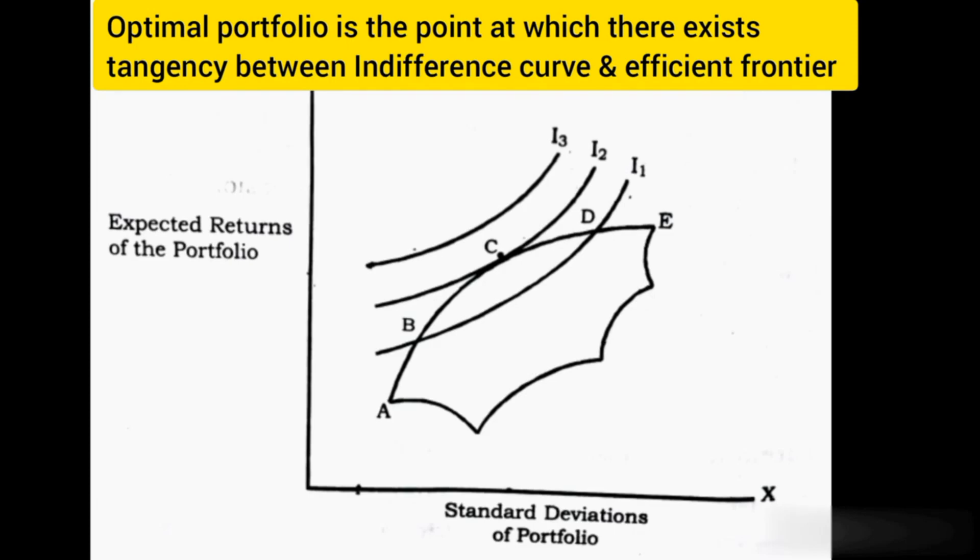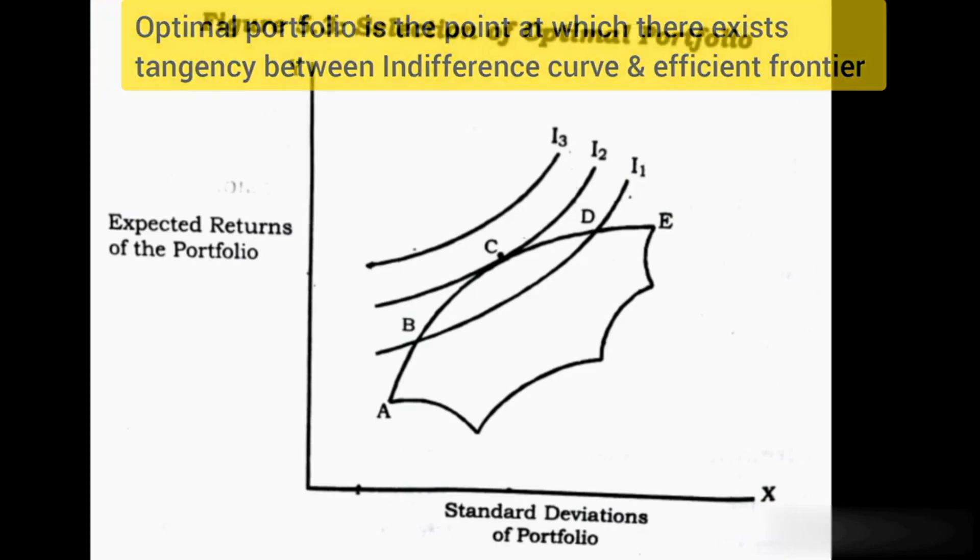Okay. C is the optimal portfolio. This concludes the explanation of Markowitz's Portfolio Utility Theory.